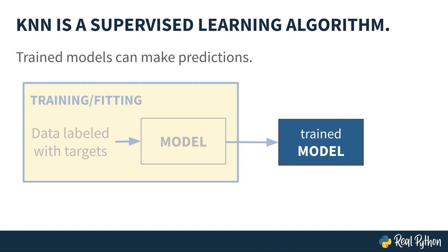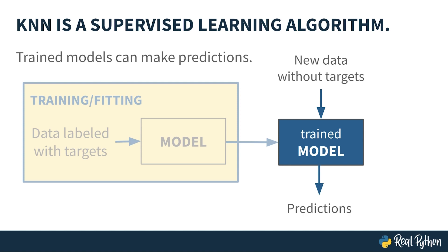Trained models can then go on to make predictions for new data points. Later, you may have some new data that do not have target labels. You can pass these values into your trained supervised learning model and the output will be predicted targets. This phase is called predicting. KNN works just like this — you'll pass some training data with known target values into it, and then you'll be able to use that trained model to make predictions for new data observations that perhaps do not have target labels.